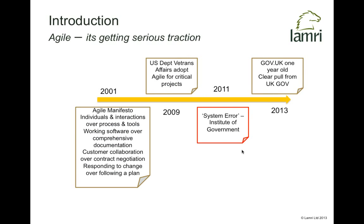Over the last 10 to 15 years, agile has become very much the way we do things. More traditional customers are starting to say it's no longer optional — it now just makes sense. The discussion has shifted from 'should we do agile?' to 'how can we make use of this approach across the wider organization?'